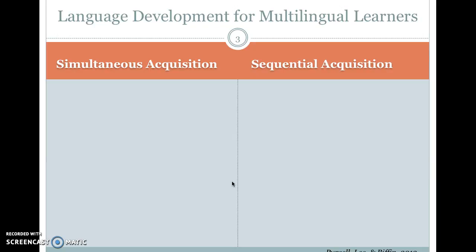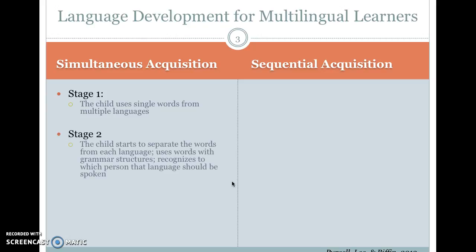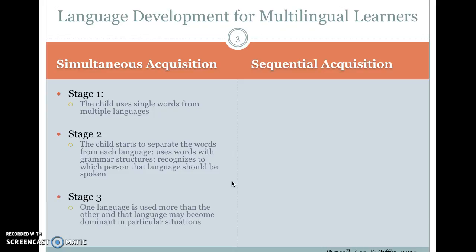Simultaneous means at the same time. So if you're going to learn two languages at the same time as a child, you're going to use single words from multiple languages, and then you'll start to separate the words from each language and use words with grammar structures, recognizing to which person the language is typically spoken. This typically happens around ages 3, 4, 5.